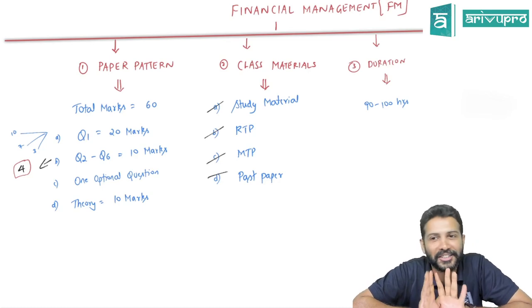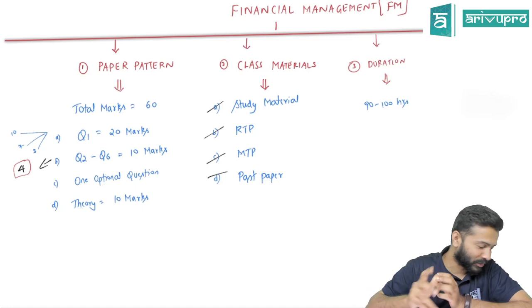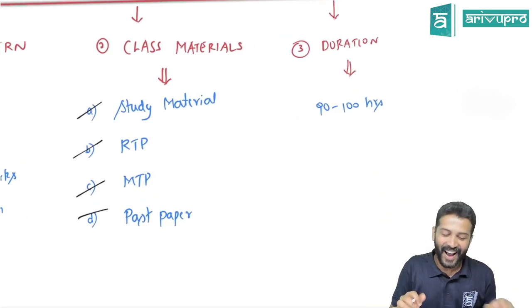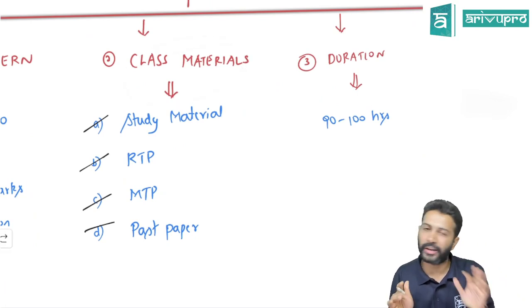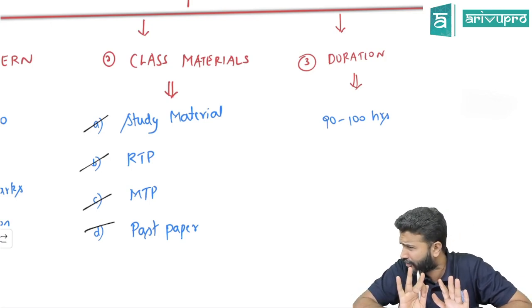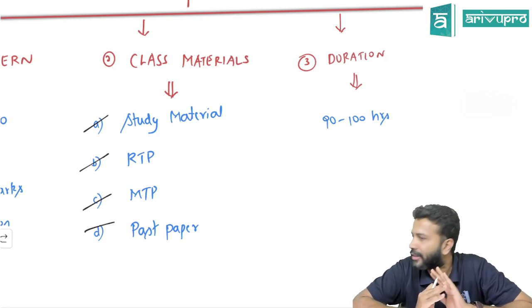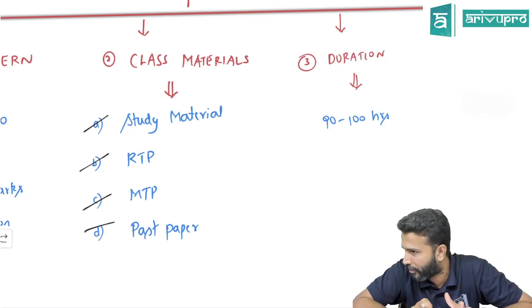Is this material sufficient? Yes, it is quite comprehensive. I cleared CA by following the same approach. Even rank holders follow the same: study material questions, RTP, MTP, and previous year questions of last two to three attempts. That should be good enough.